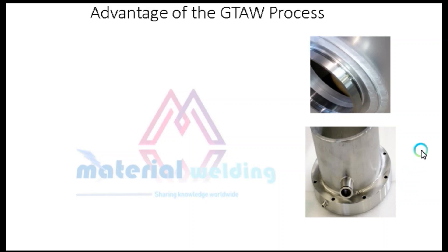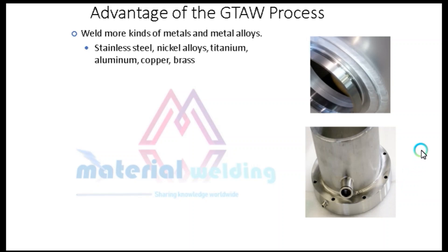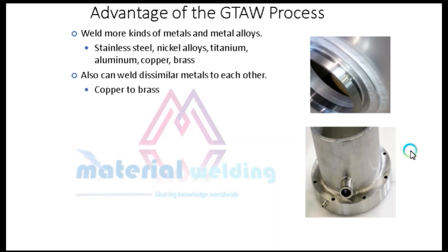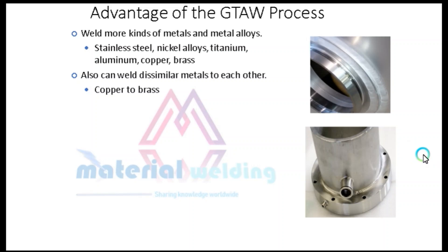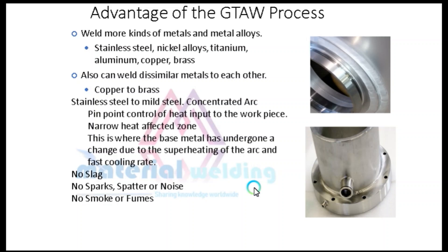The advantages of TIG welding include: the ability to weld more kinds of metals and metal alloys such as stainless steel, nickel alloys, titanium, aluminum, copper, and brass. We can also weld dissimilar metals to each other, for example copper to brass and stainless steel to mild steel. It gives a concentrated arc that helps pinpoint control of heat input to the workpiece. It gives a narrow heat-affected zone — the area where the base metal has undergone change due to superheating of the arc and fast cooling rate. There is no slag, no sparks, spatter or noise, and no smoke or fumes.